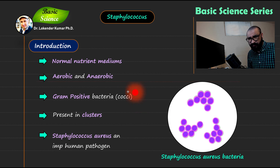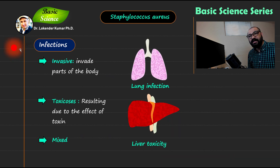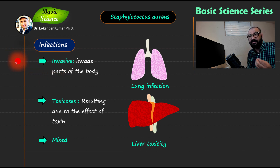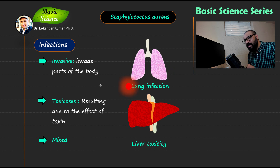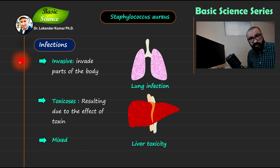Moving to the next slide, I'm discussing infections. Infections with Staphylococcus are characterized as invasive, toxicosis, and mixed. In the case of invasive infections, as the name suggests, the bacteria invades body parts. I have designed a human lung here — in Staphylococcus aureus pneumonia it invades and destroys the lungs. The most important infection is wound infection, where the bacteria colonizes areas of tissue injury and invades the host through that injury.